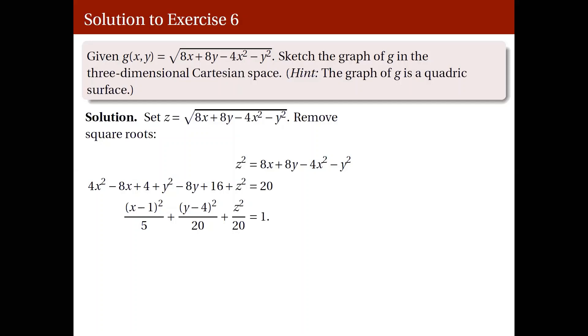And there, we get a left-hand side with a sum of 3 squares equal to 1. So its graph will be an ellipsoid centered at (1, 4, 0). Like that. But it will not be enough.